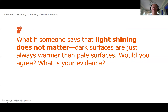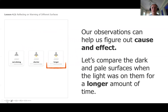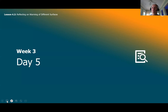Color does make a difference here, and our evidence was going outside and feeling the surfaces - you actually touching the surfaces is evidence. You did the test, so you were a scientist this week by testing, investigating, and collecting data. What if someone says light shining doesn't matter and dark surfaces are always warmer? Well, we know that at night, when the light doesn't shine, both the dark and pale were cold. So light definitely makes a difference - our observations help us figure out cause and effect.